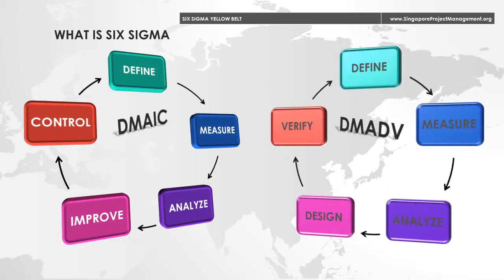Six Sigma projects usually follow two main methods: DMAIC and DMADV. They each have five phases and some similar processes. DMAIC is used primarily for improving existing business processes, while DMADV is used for creating new products and process designs.